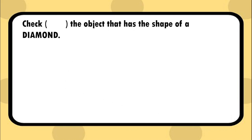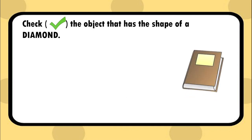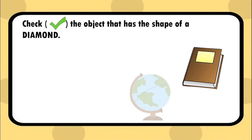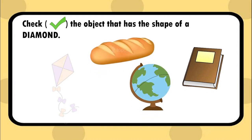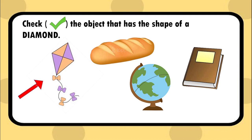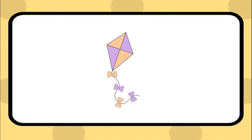Check the object that has the shape of a diamond. Yes, the kite has the shape of a diamond.